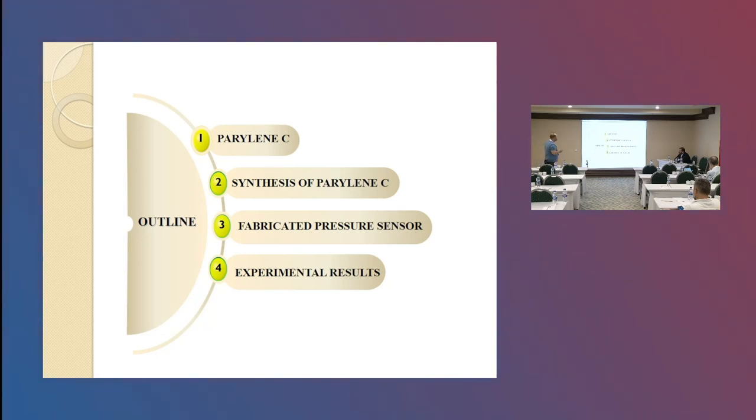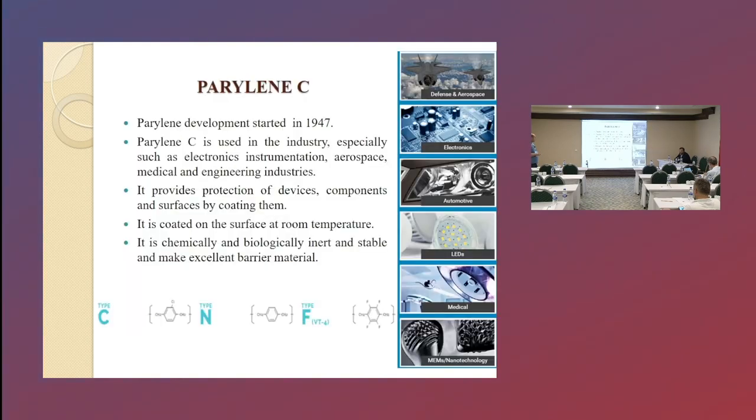Parylene is our main material, synthesis of Parylene, fabricated plastic sensor, and experimental results. Parylene development started in 1947. Three types of Parylene were developed. These are Parylene C, Parylene N, and Parylene F.